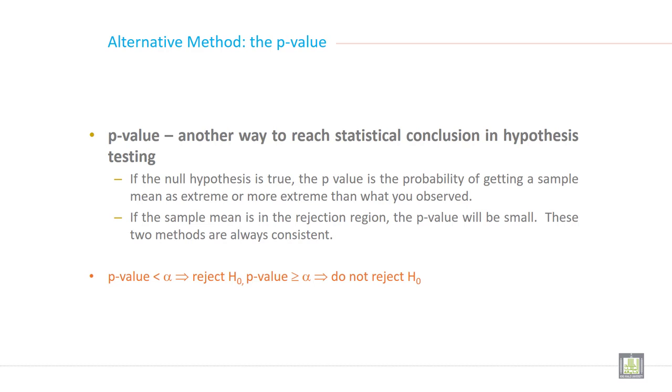If p-value is less than alpha, the significance level or type 1 error rate, reject the null hypothesis. Or if p-value is greater than or equal to alpha, do not reject the null hypothesis.